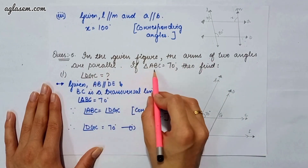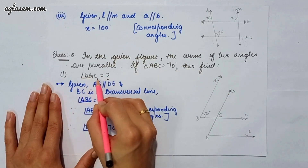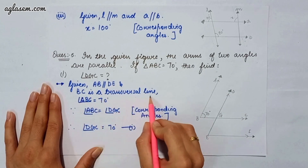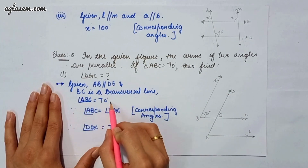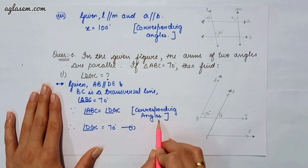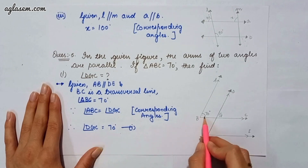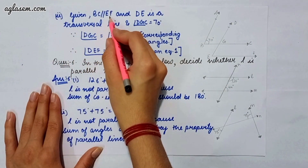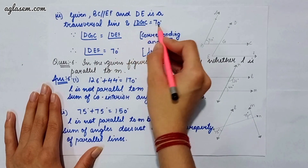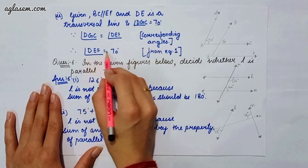Question 5 says: in the given figure, the arms of two angles are parallel. If angle ABC equals 70 degrees, find the required angles. Given AB is parallel to DE and BC is the transversal, angle ABC equals angle DGC by corresponding angles, so angle DGC equals 70 degrees. For the second part, given BC parallel to EF and DE is the transversal, angle DGC equals angle DEF by corresponding angles, so angle DEF equals 70 degrees.